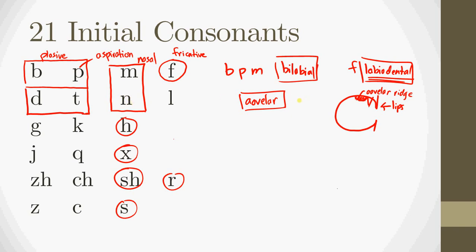Here we also have a nasal — n — which means complete cutoff of airflow because of the tongue at the alveolar ridge, with a little bit of air coming out of the nose. And then we have l, which is a little different: it's what we call lateral, meaning the tongue goes up to the alveolar ridge but the air actually flows to the outsides of the tongue. Still alveolar, but a slightly different mode. So the row gives us: plosive unaspirated, plosive aspirated, nasal, and then lateral.